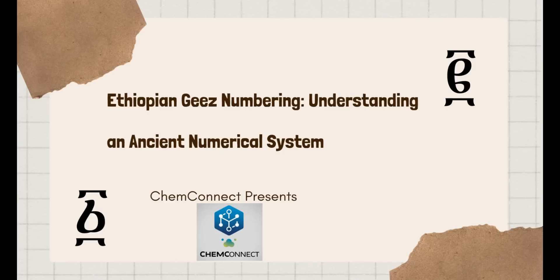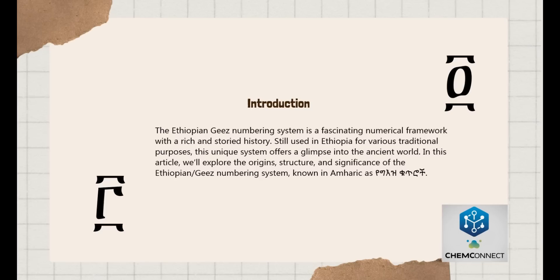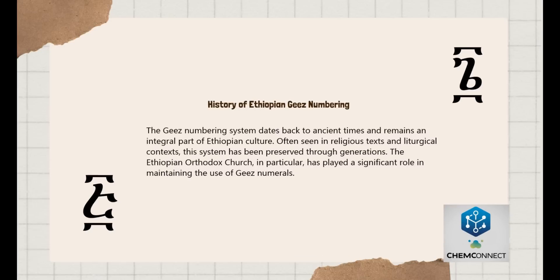Ethiopian Ge'ez Numbering: Understanding an Ancient Numerical System. Introduction: The Ethiopian Ge'ez Numbering System is a fascinating numerical framework with a rich and storied history, still used in Ethiopia for various traditional purposes. This unique system offers a glimpse into the ancient world. In this article, we'll explore the origins, structure, and significance of the Ethiopian Ge'ez Numbering System, known in Amharic.